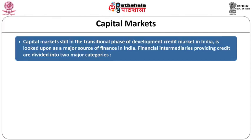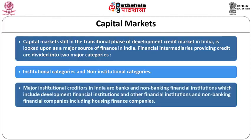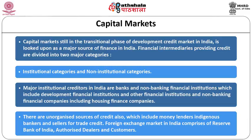The capital market is still in the transitional phase of development. Credit markets in India are looked upon as a major source of finance. Financial intermediaries providing credits are divided into two major categories — institutional and non-institutional. Major institutional creditors in India are banks and non-banking financial institutions, which include development financial institutions, other financial institutions, and non-banking financial companies including housing finance companies. There are also unorganized sources of credit, which include moneylenders, indigenous bankers, and sellers for trade credit.